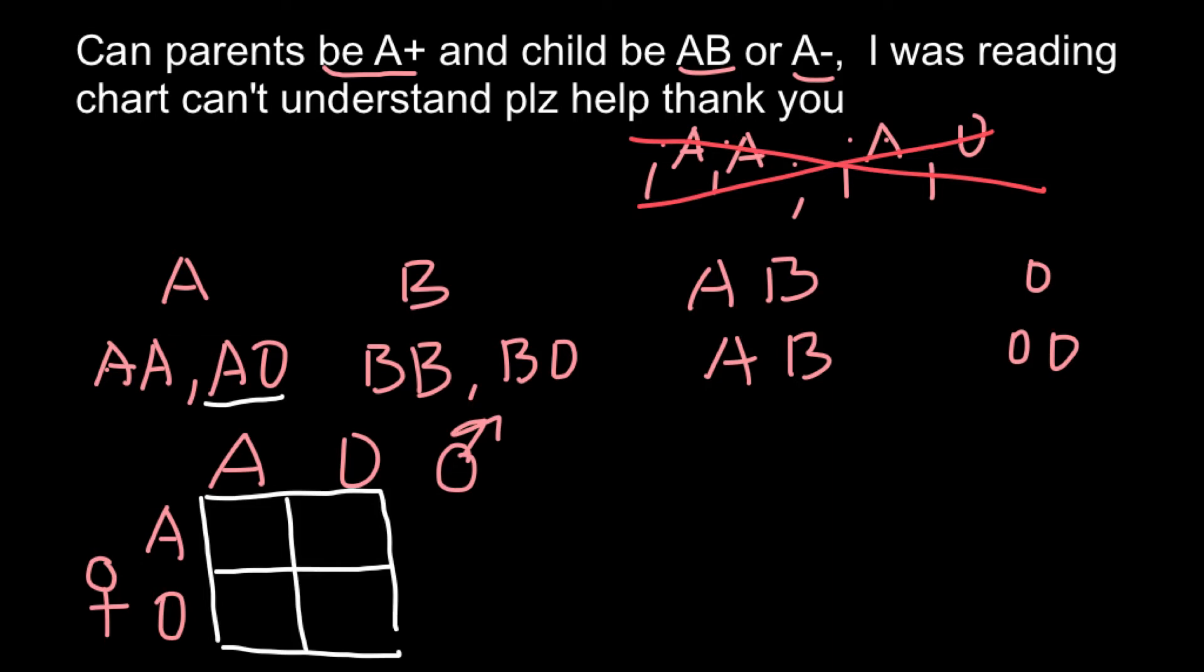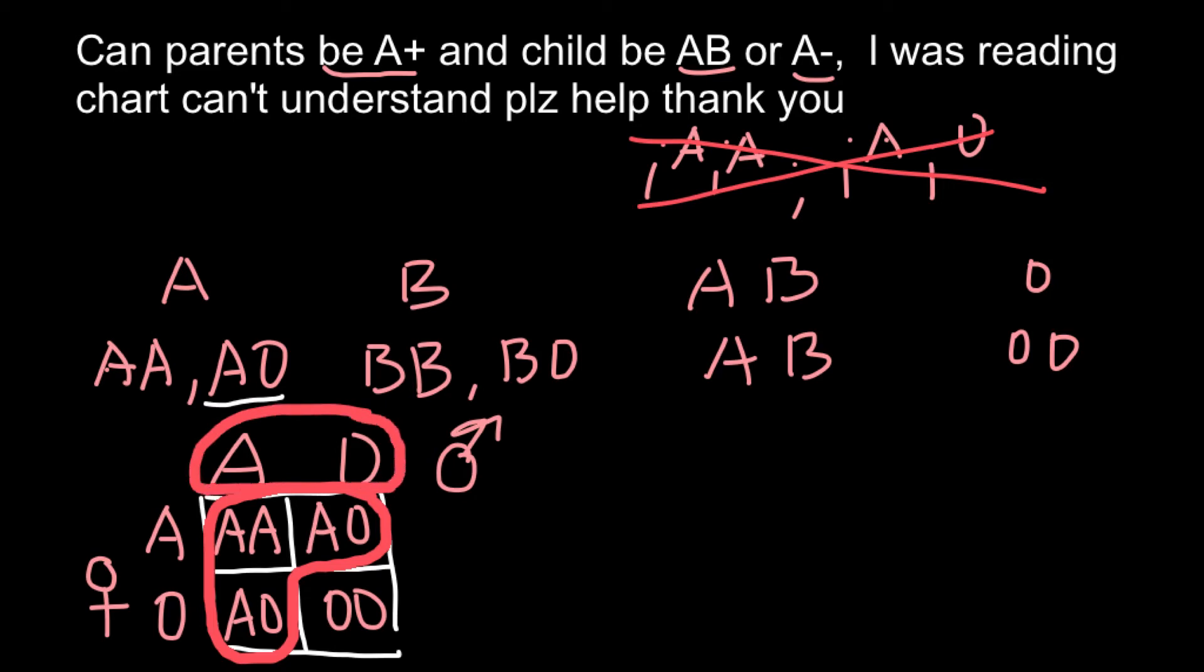Let's see what kind of progeny they may have. So here we would have AA, AO, AO, and OO here. So as you see, according to this Punnett square, three quarters of the progeny would belong to the blood group A, just like their parents, and one quarter would belong to the blood group O.